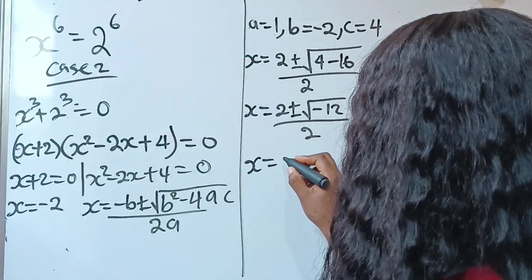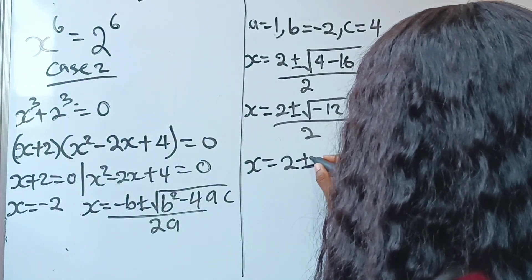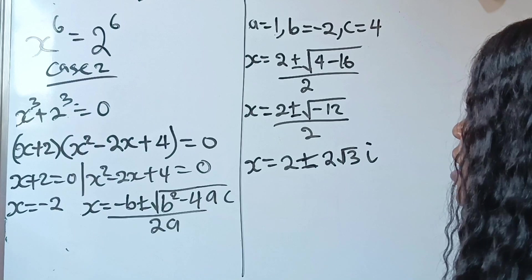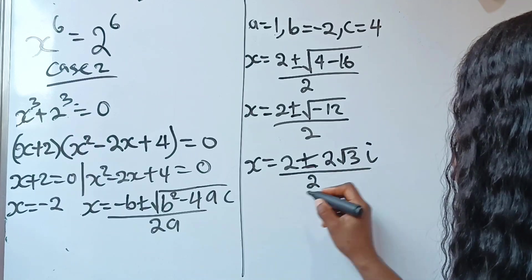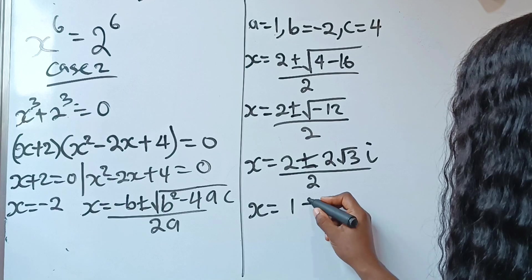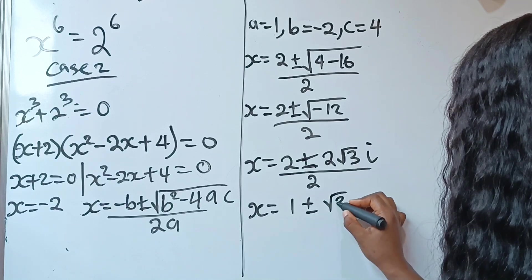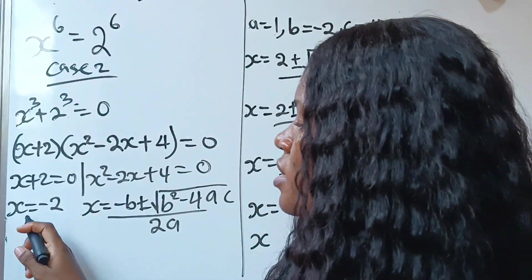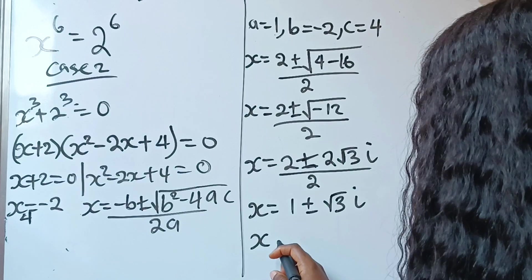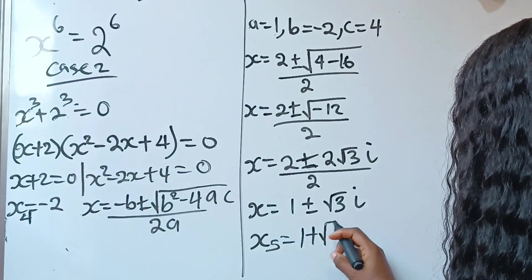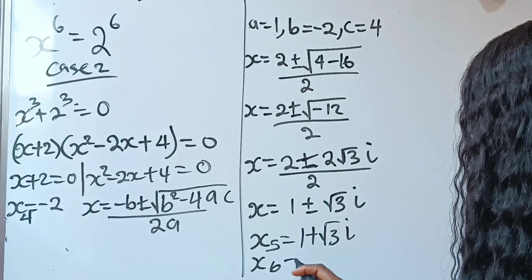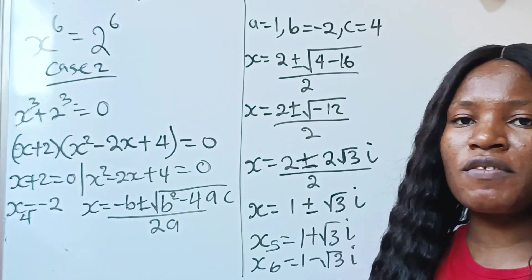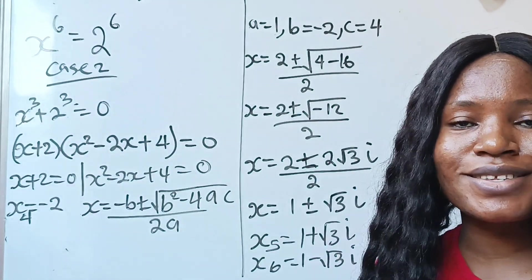We have x equals 2 plus or minus 2 root 3i, divided by 2. This simplifies to x equals 1 plus or minus root 3i. So x₅ equals 1 plus root 3i, and x₆ equals 1 minus root 3i. These are all six values of x. Please give us a thumbs up if you enjoyed this video.